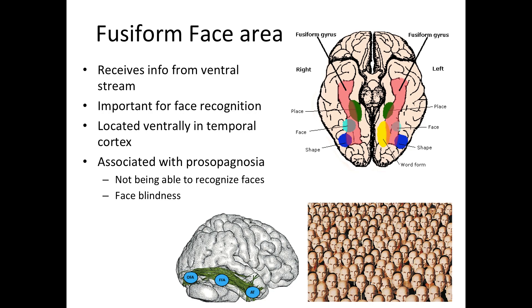A neurological condition associated with this area is called prosopagnosia — Brad Pitt is believed to have it. When someone has prosopagnosia they are not able to recognize faces, so it is also called face blindness. About one in every 50 people have prosopagnosia. If you have it, you will not be able to tell different faces apart and are not sensitive to tiny differences within facial features.